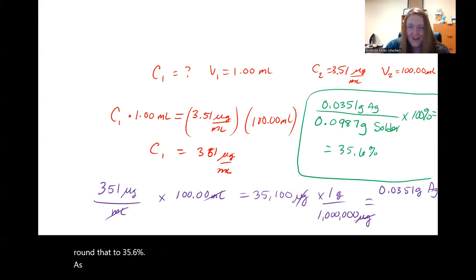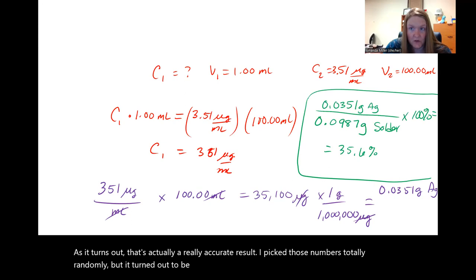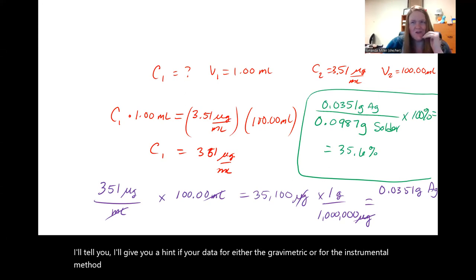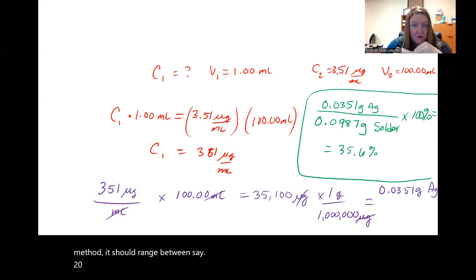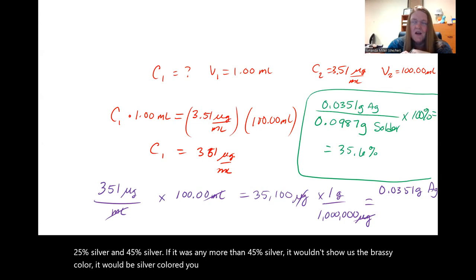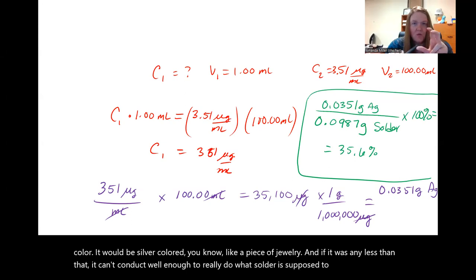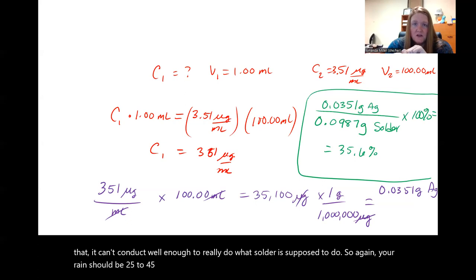If we go back to our original solder piece, we can now do a percent composition calculation. We have 0.0351 grams of silver from our first graph. And then we do the dilution equation. And then we have to do some dimensional analysis to cancel out millimeters and get it into grams. Then I want to do the part of silver. And then the whole piece was the solder piece. So my original data was 0.0987. That's the little solder. And I'm going to multiply by 100% again. So in this case, I get 35.5623 is what the computer told me. I'm going to round that to 35.6%. As it turns out, that's actually a really accurate result. I picked those numbers totally randomly, but it turned out to be very close to what the manufacturer says is in solder. I'll tell you, I'll give you a hint. If your data for either the gravimetric or for the instrumental method, it should range between, say, 25% silver and 45% silver. If it was any more than 45% silver, it wouldn't show us the brassy color. It would be silver colored, like a piece of jewelry. And if it was any less than that, it can't conduct well enough to really do what solder is supposed to do. So again, your range should be 25 to 45%.